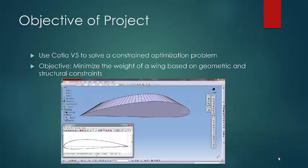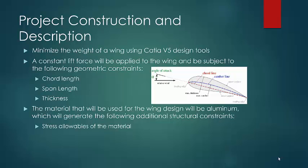The objective of this project is to minimize the weight of a wing with specific airfoil geometric constraints as well as structural analysis constraints. We will be using CATIA V5 to design this wing and generate those results.